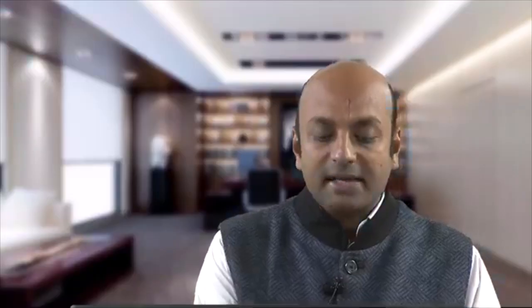Next is the skew symmetric matrix. A square matrix A of order n is said to be skew symmetric if Aᵀ = −A. For example, if you take the transpose of a given matrix and it equals −A, then the matrix is skew symmetric. However, another matrix is not skew symmetric because when you take −Aᵀ, it is not equal to −A for that matrix.